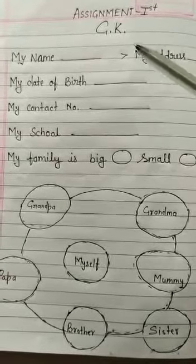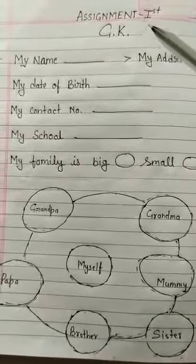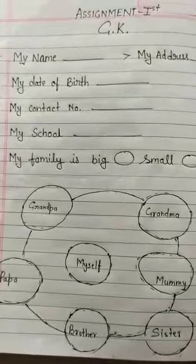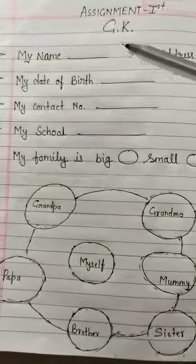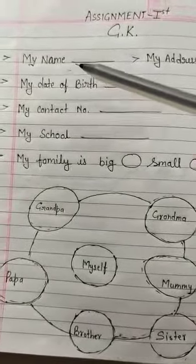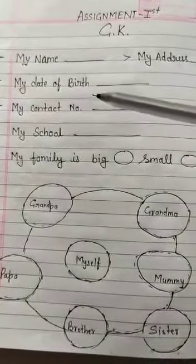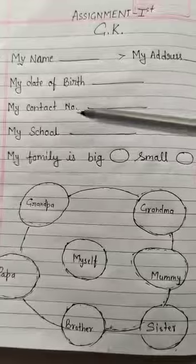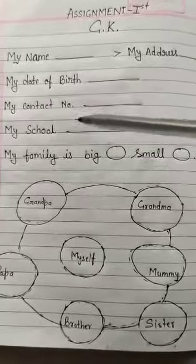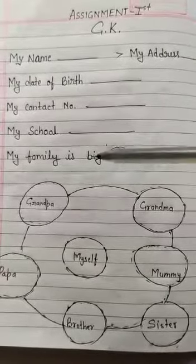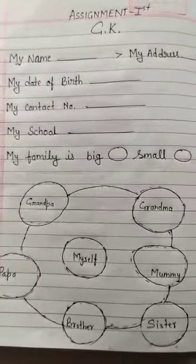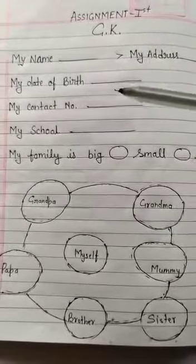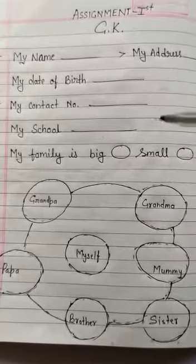Let's Start Assignment First — GK. Write your My Name, Date of Birth, My Contact Number, My School, and My Address.